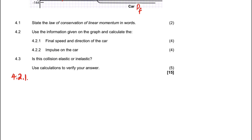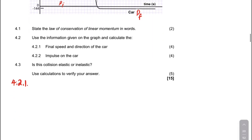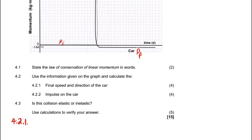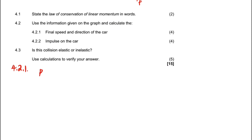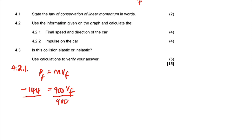Question 4.2: Use the information on the graph to calculate the final speed and direction of the car. We use the final momentum to get the final velocity. The formula is: final momentum equals mass times final velocity. The final momentum is negative 144 (note it is negative), the mass of the car is 900, and we solve for the final velocity by dividing: negative 144 divided by 900.